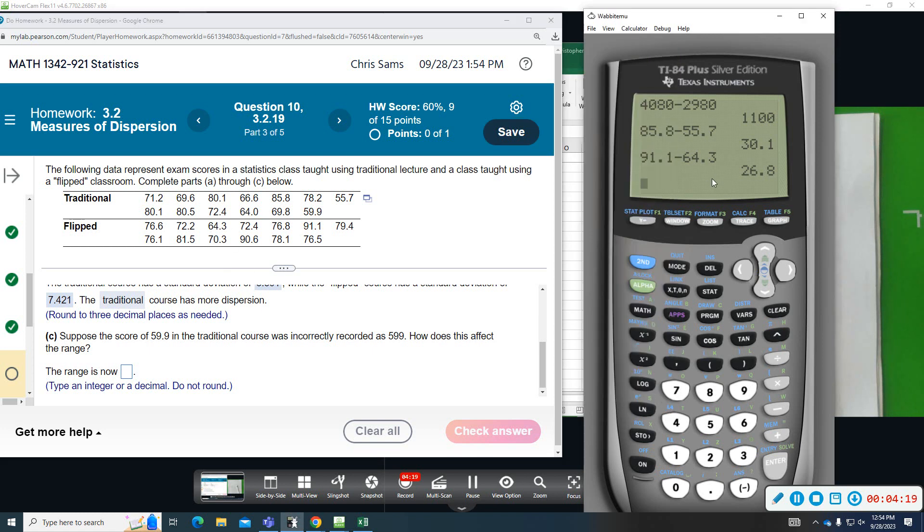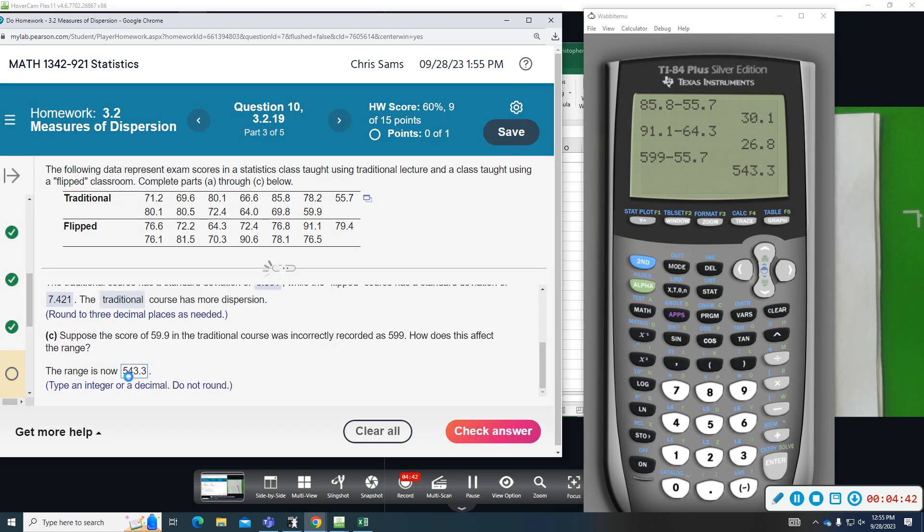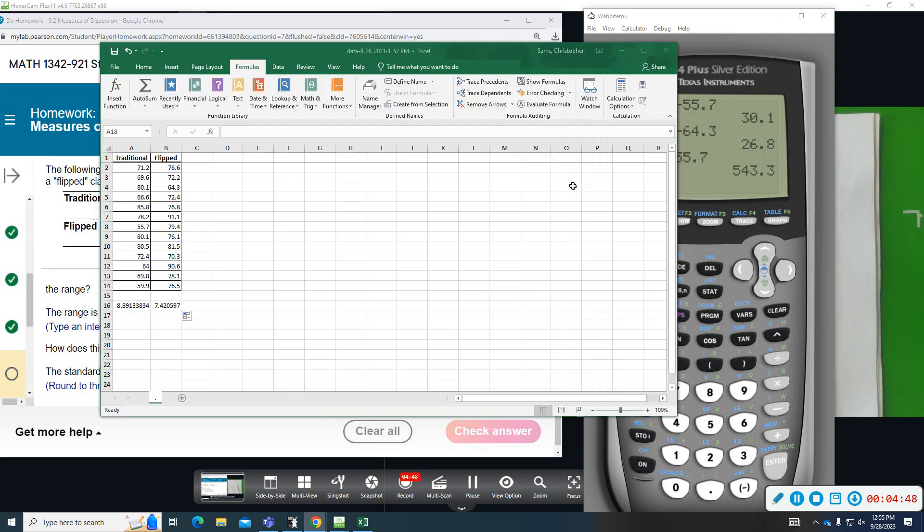So the range would now be 599 take away the smallest of 55.7. And the range is now 543.3. The standard deviation is now, so I'm going to record 599 in this cell right here and it will update the formula for you. So the standard deviation is now 146.159.